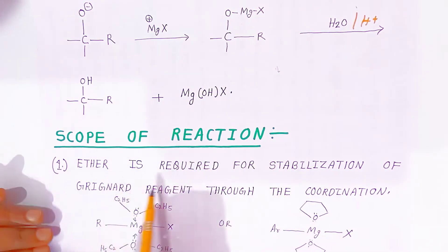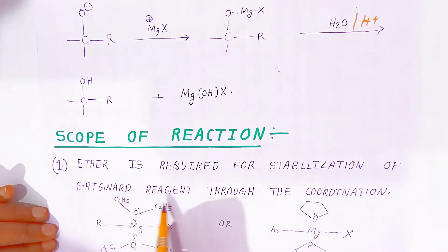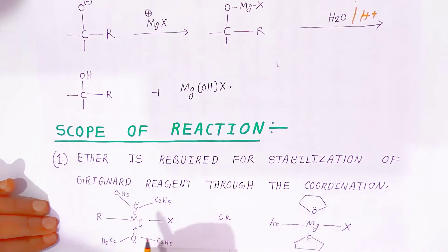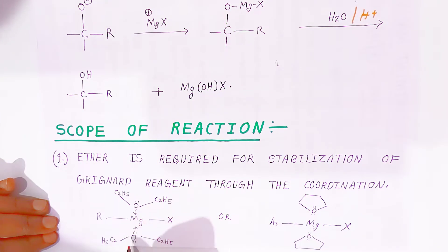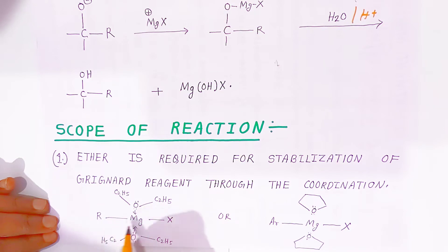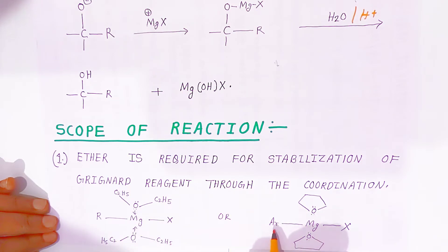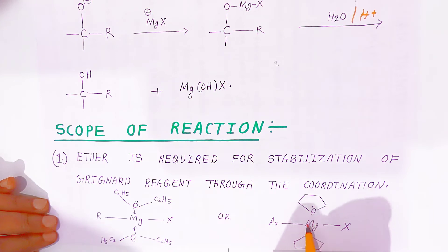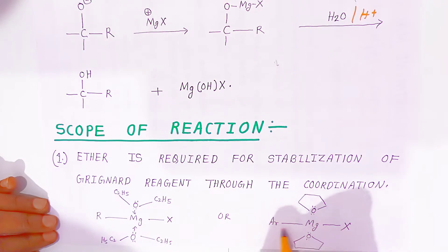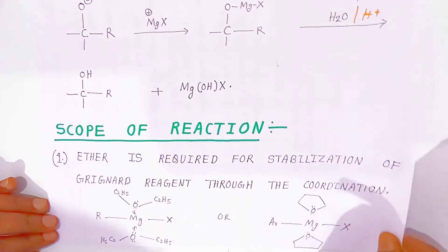Regarding the scope of the reaction: ether is required for stabilization of the Grignard reagent through coordination. In presence of dry ether, the ether makes RMgX, that is aryl magnesium halide, stable. Ether attaches to magnesium from both sides, and the same stabilization applies to aryl magnesium halide as well.